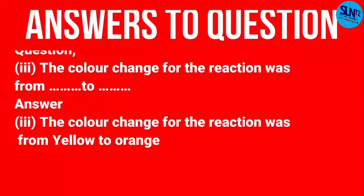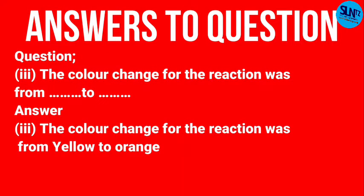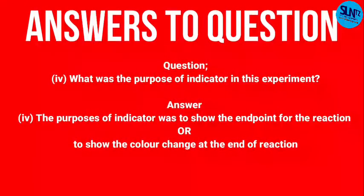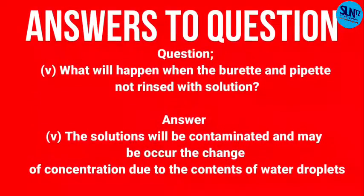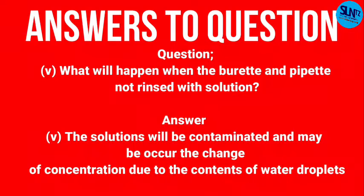The color change for the reaction was from yellow to orange. Before titration the solution is yellow and after titration, at the end point, it is orange. The purpose of the indicator is to show the end point of the reaction, or the color change at the end of the reaction. If the burette and pipette are not rinsed with the solutions, the solutions will be contaminated and a change in concentration may occur due to water droplets.